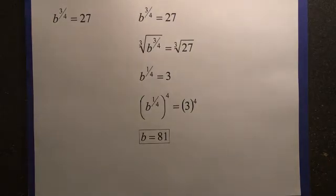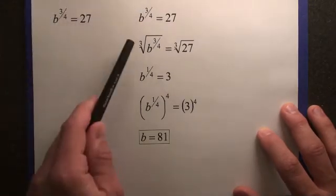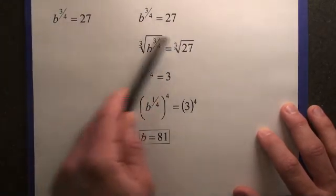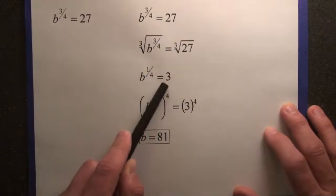So we're still going to do the same process. We're going to get rid of the numerator part of the exponent first. We're going to do the cube root of both sides first. That brings us to b to the 1/4th equals only 3.